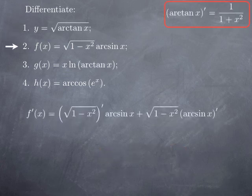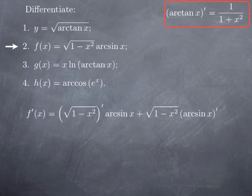Now we want to differentiate the product of the square root of 1 minus x squared with arcsin x. Because this is a product, we start out with the product rule: derivative of the first factor multiplied by the second factor unchanged, plus first factor unchanged multiplied by derivative of the second factor.